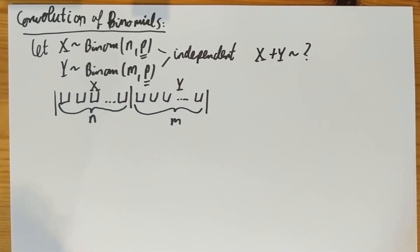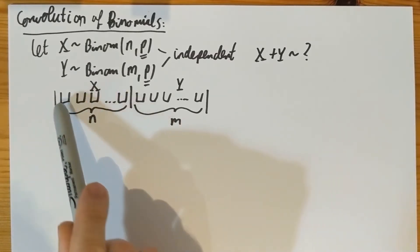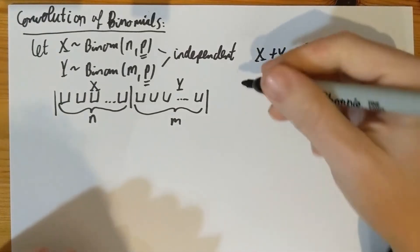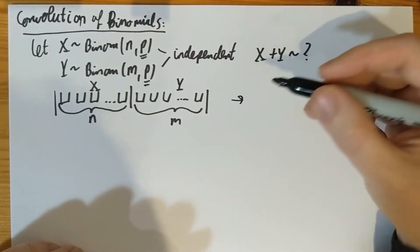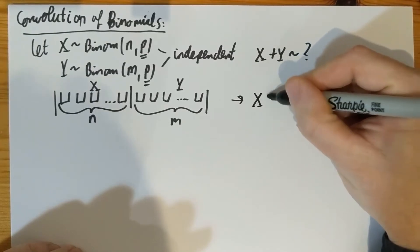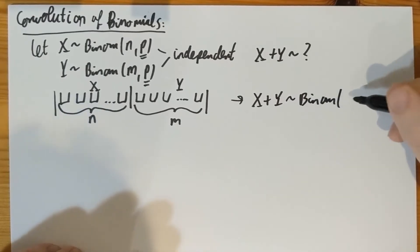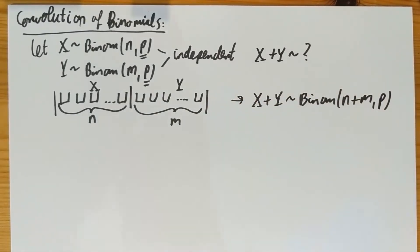And if you now add X plus Y together, then it's the total number of successes in the total of N plus M trials. And therefore, it seems clear from this picture in a probabilistic way or a counting way that X plus Y must be binomial of parameters N plus M, because that's the combined number of trials, and P. So the sum of two independent binomials of the same P parameter is again binomial with parameters N plus M and P. However, let's do this using the convolution formula.